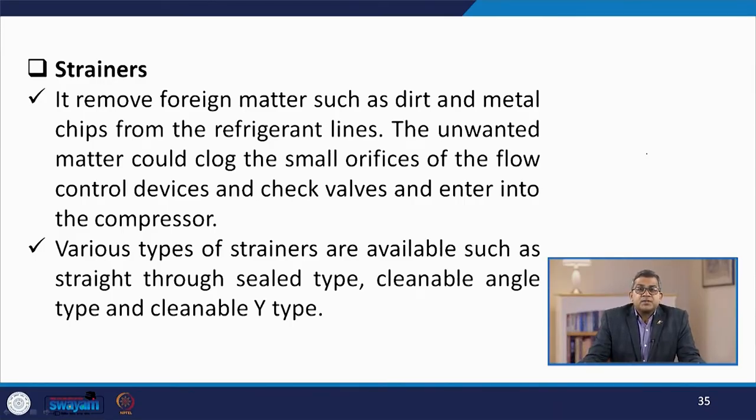Over the period of circulation of refrigerant in the piping system, the refrigerant may accumulate certain types of dirt, dust, and debris due to metal chip removal, corrosion, or problems in the internal lining. The basic purpose of a strainer is to remove foreign matter like dirt and metal chips from the refrigerant line, as unwanted matter can clog the small orifice of the flow control device, throttling device, check valves, and enter into the compressor. Various types of strainers are available, such as straight-through seal type, cleanable angle type, and cleanable Y type.